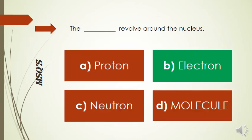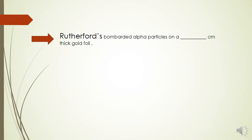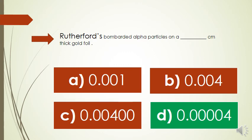Now let's discuss MCQs. The first is: what revolves around the nucleus? You have four options: proton, electron, neutron, and molecule. The correct option is electron revolves around the nucleus. This is a point from the result of Rutherford's model. Another MCQ: Rutherford bombarded alpha particles on how many cm thick gold foil? Options a, b, c, and d. You know that Rutherford bombarded alpha particles on 0.00004 cm thick gold foil.